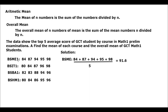For example, for BSME 1, we have here the top 5 average scores of GCT students for the prelim examination. So we have 84, 87, 94, 95, and 98.